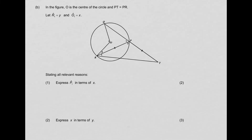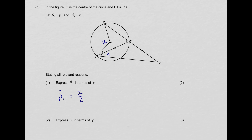Question B: in the figure, O is the center of the circle, and PT equals PR — they've labeled the equal marks. Let R1 equal Y and O1 equal X. Question 1: express P1 in terms of X. P1 is an angle at the circle subtended by arc QR, and arc QR also subtends X at the center. So straight away, P1 equals X over 2, and the reason is: angle at center equals twice the angle at the circumference. Write that in — X over 2.